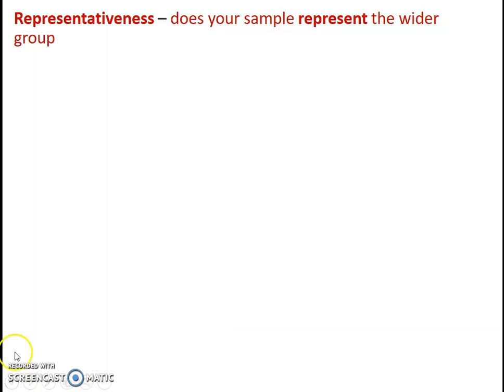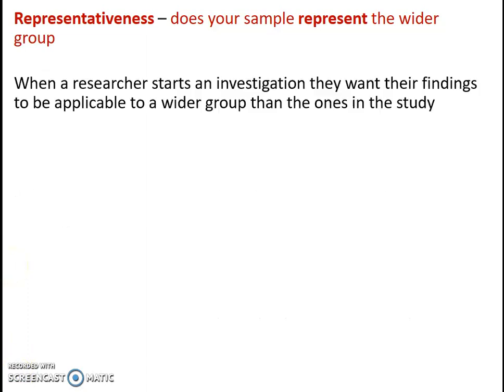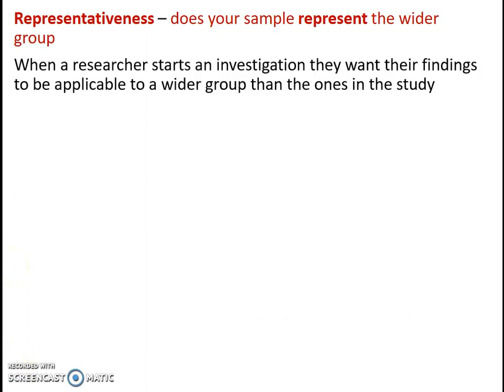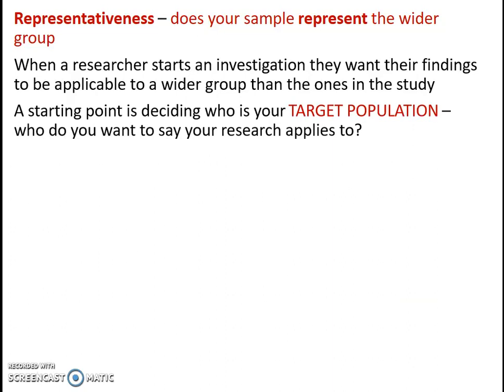The next issue we're going to talk about is representativeness — does your sample represent the wider group? When a researcher starts a sociological investigation, they want to make sure their findings can be applicable to a wider group than the ones in the study. A starting point is deciding who is your target population — who are you actually trying to find out more about? For example, if I wanted to research why teenage girls read more than teenage boys in England, my target population is all teenagers in England.